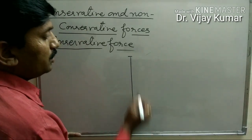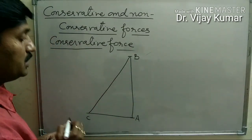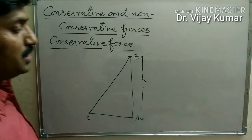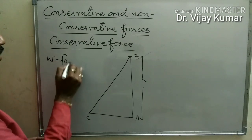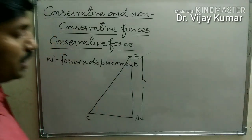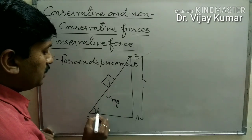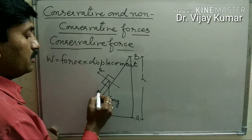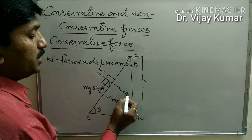Suppose these are two initial and final positions and the path followed by the body is ABC. Suppose the body follows this path and the height AB is H. We know that work done is equal to force into displacement of the body. Here the weight is mg, the angle is theta, and reaction force is R. The component of weight in one direction is mg sine theta and in the other direction it is mg cos theta.